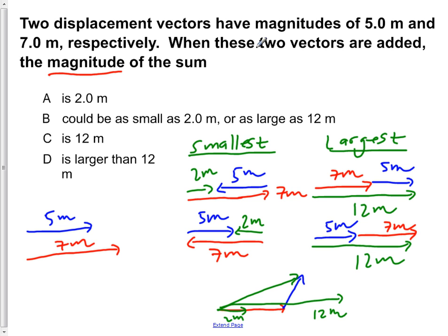So in going through our choices, we know the magnitudes of the vectors are added. The magnitudes are not always 2 meters, so that's wrong. B says it could be as small as 2 meters or as large as 12 meters. That satisfies everything we have said here.